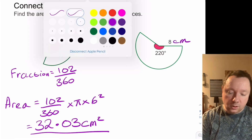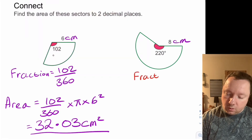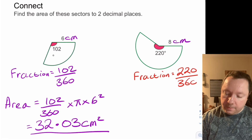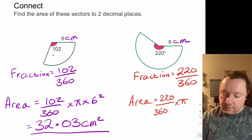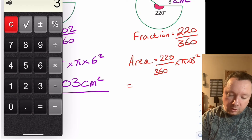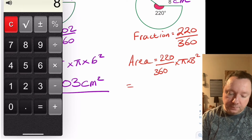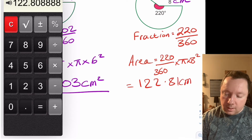Let's look at the second one. Our fraction is 220 out of 360. So our area is 220 out of 360 times pi times 8 squared. Using a calculator: 220 divided by 360, times pi, times 8 times 8 gives 122.08 — so 122.08 centimetres squared.